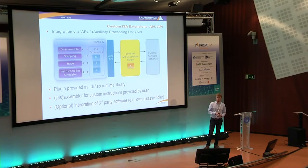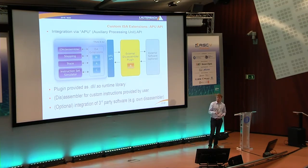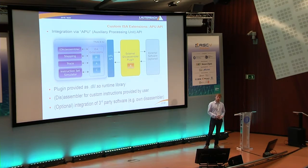There's also a less obvious way: self-integration. You can integrate it yourself using an API we provide, called the API for auxiliary processing units. You just have to write a small, simple runtime library and load, for example, an external disassembler plugin. This allows you to add disassembler and assembler support yourself. You might choose this option if your ISA extensions are confidential and you don't want to reveal them to third parties such as Lauterbach. Another scenario is if you're in an early prototyping phase where your ISA is changing rapidly and you want to be very flexible — even if it's only as an interim solution.